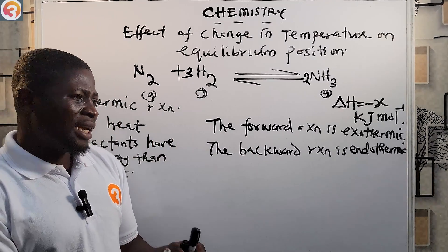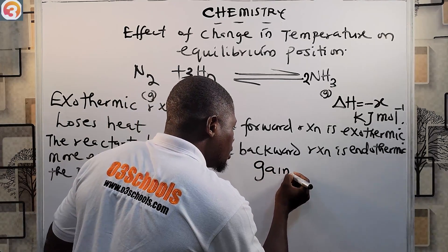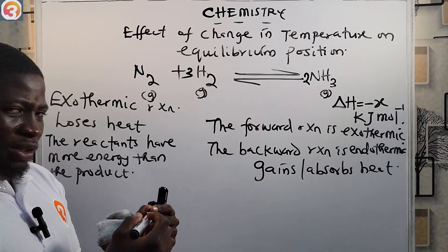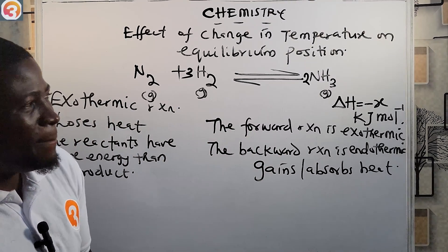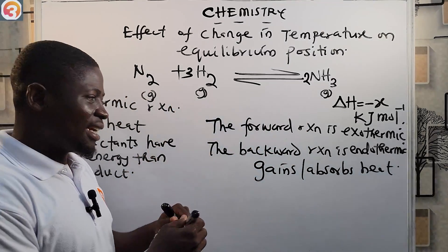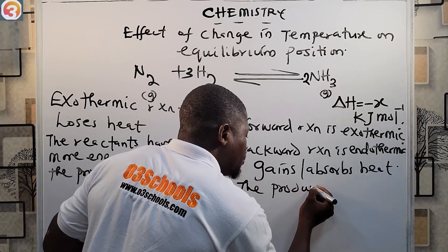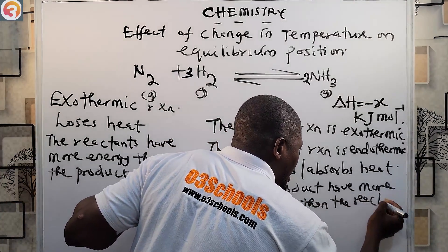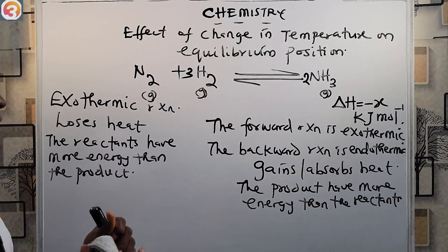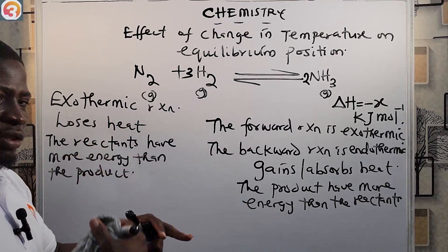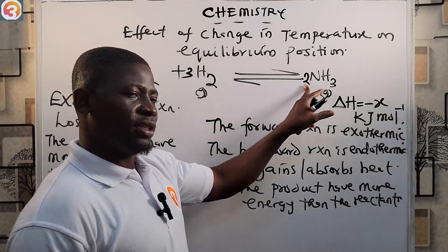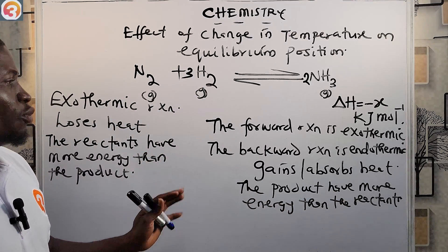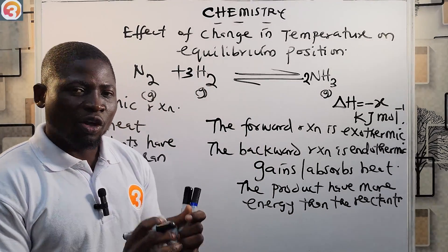An endothermic reaction is a reaction that gains or absorbs heat from the surroundings, thereby making the products have more energy than the reactants. So: exothermic reactions lose heat to the surroundings, making the reactants have more energy than the products; endothermic reactions absorb heat from the surroundings, making the products have more energy than the reactants.